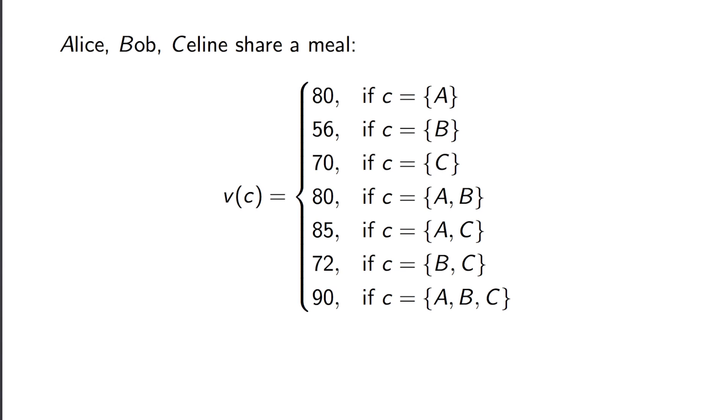Here's the characteristic function. So that says, okay, if Alice was eating alone, she would pay 80. If Alice and Bob were eating alone, their bill would be 80.